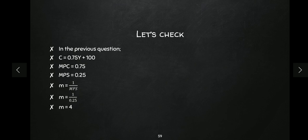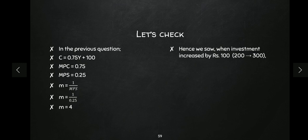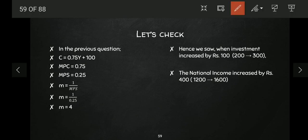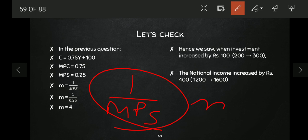The value of the multiplier is 1 / MPS = 1 / 0.25 = 4. This means if investment changes by 100 rupees, national income should change by 400 rupees — which is exactly what we observed. National income went from 1200 to 1600, an increase of 400. In simple terms, the value of investment multiplier = 1 / marginal propensity to save. I hope this is clear to all of you.